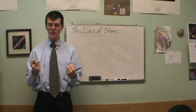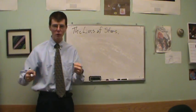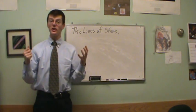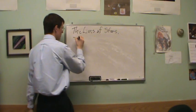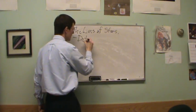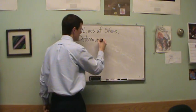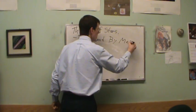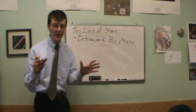The key characteristic that determines what's going to happen to a star over its life is the star's mass. So this is determined by mass. That's a key idea here.